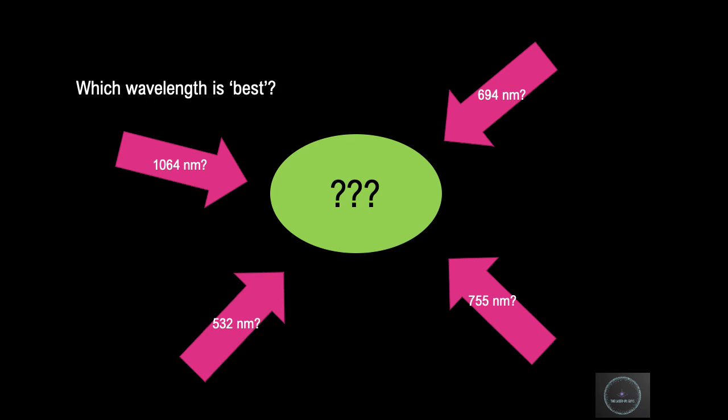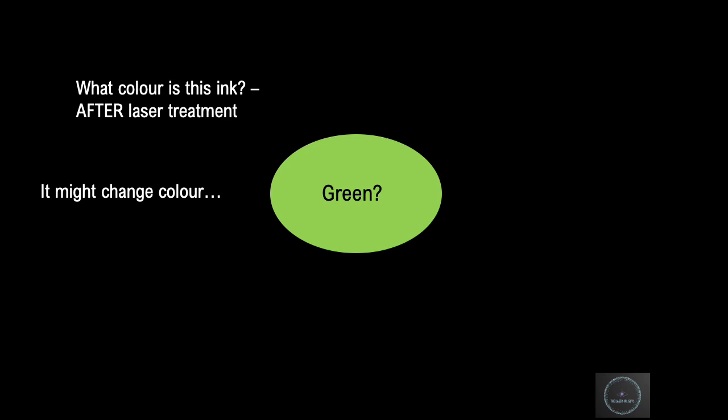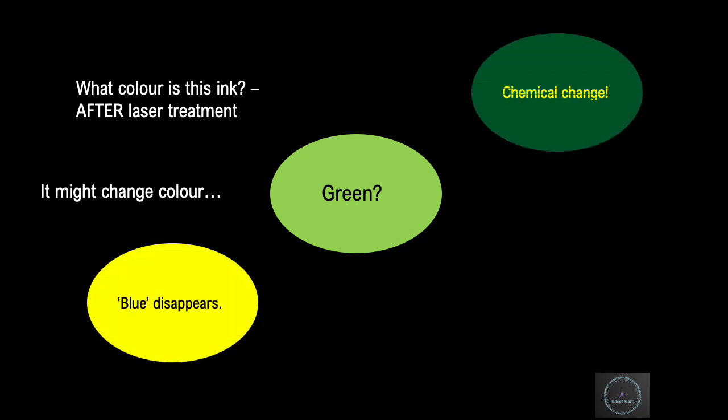The answer is, we don't know. What happens to these colours after the laser treatment? Well, it may well change colour. You might have a green ink which is actually composed of blue and yellow. The blue may well disappear under treatment and the green appears more of a yellowy colour.